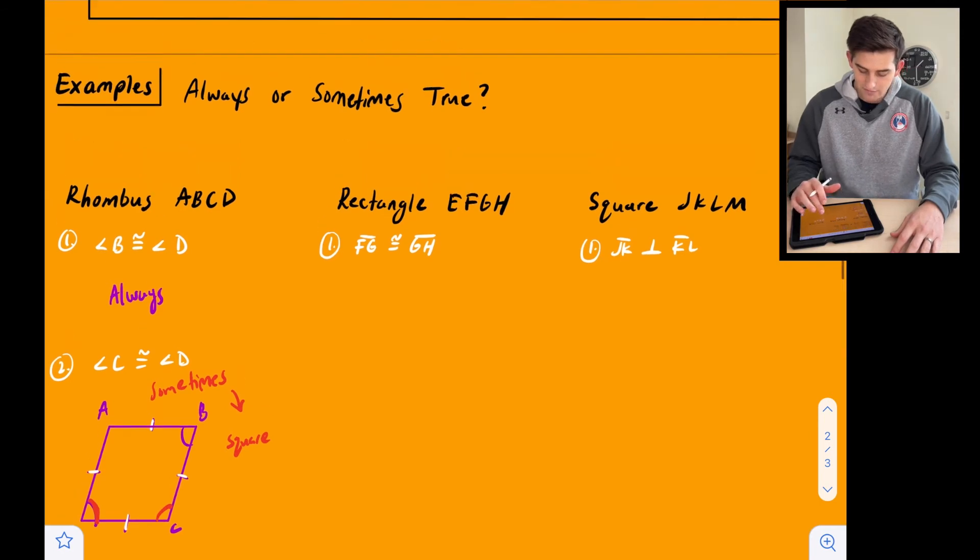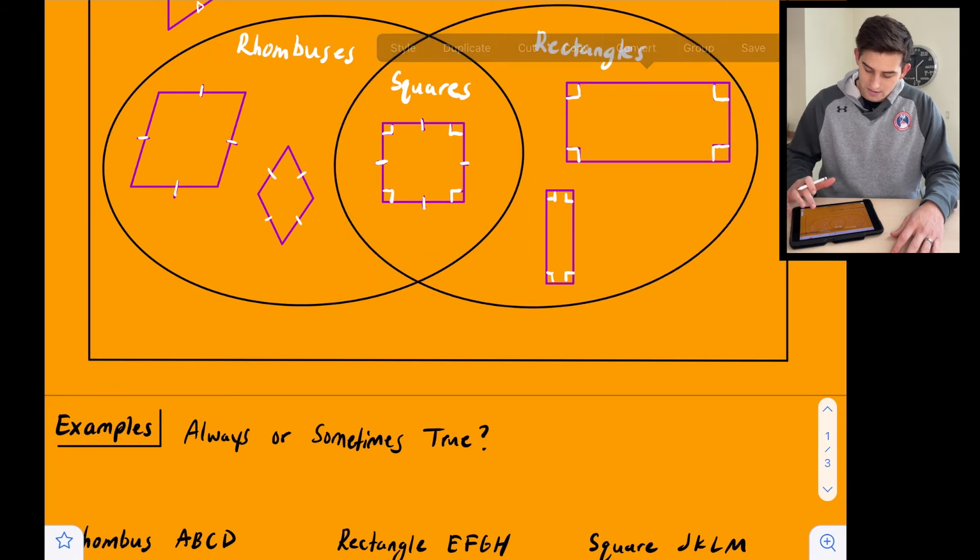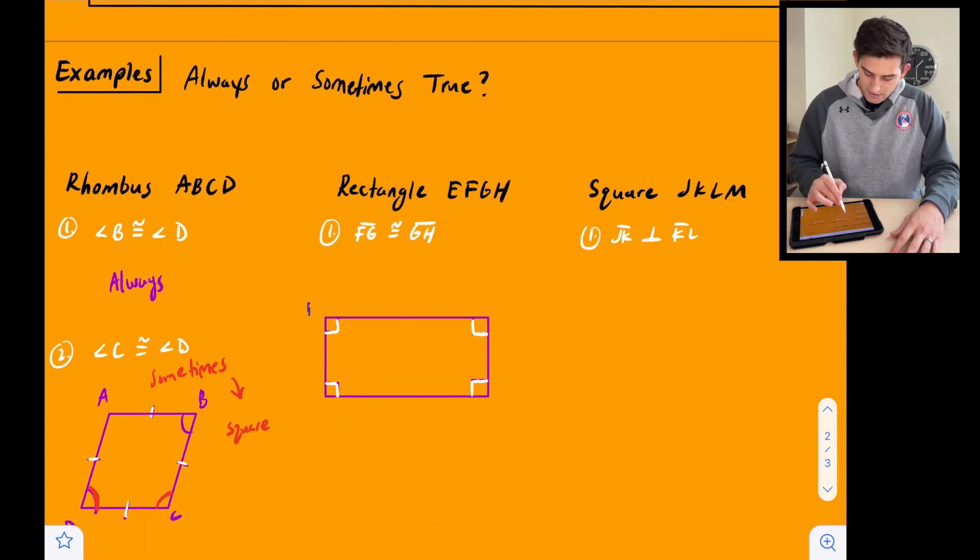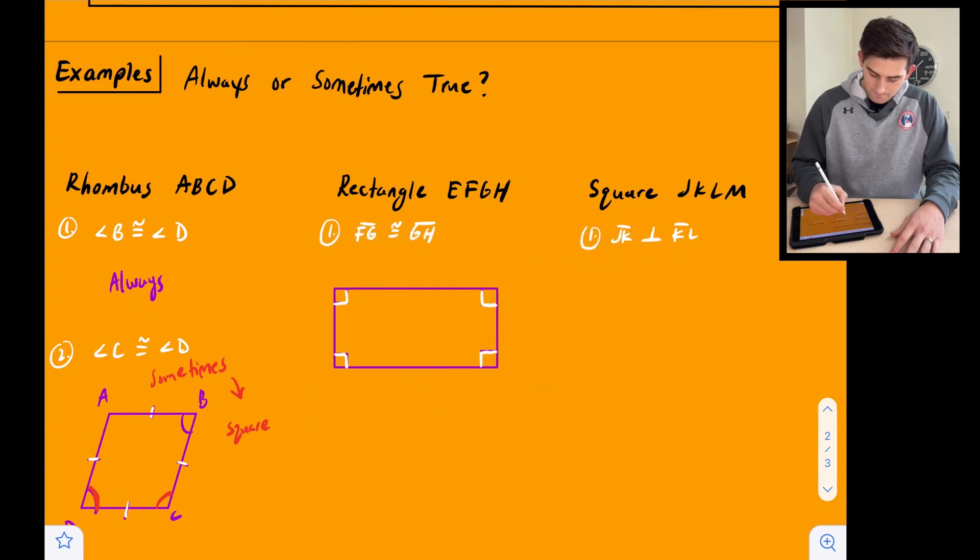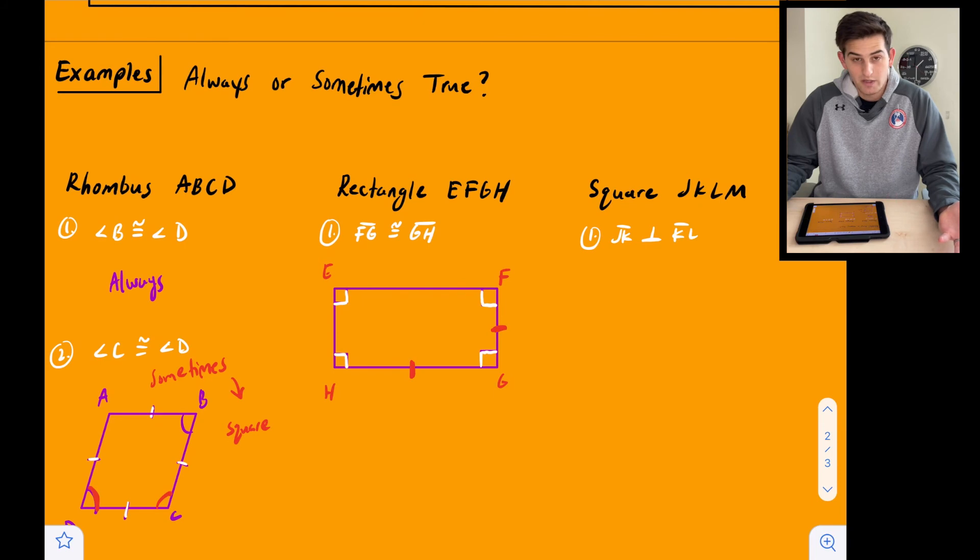All right. Rectangle EFGH. So let's copy a rectangle here. Okay. Now let's take this oval away. All right. So rectangle EFGH. Let me label our vertices here. Let's say E, F, G and H. All right. So rectangle EFGH says FG is congruent to GH. So FG and GH. Well, when we look at this rectangle right here, we're going to say, no, that's not the case, right? Because of the one we have drawn, FG is clearly shorter than side GH.